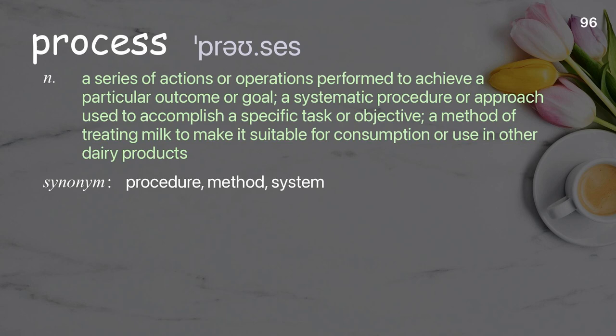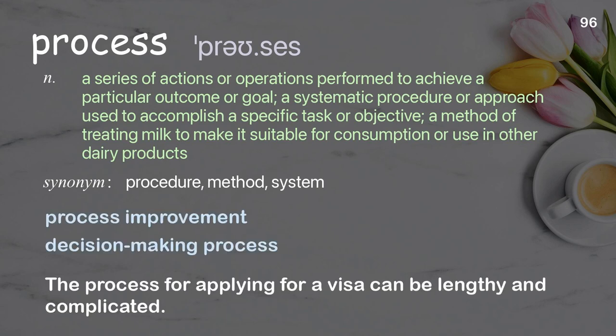Process. A series of actions or operations performed to achieve a particular outcome or goal; a systematic procedure or approach used to accomplish a specific task or objective. Examples: process improvement, decision-making process. The process for applying for a visa can be lengthy and complicated.